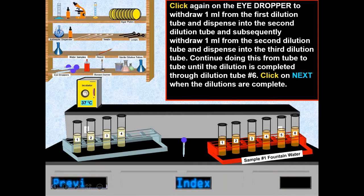Then the eye dropper was used again to withdraw 1 ml from the first dilution tube and dispense into the second dilution tube. Subsequently, 1 ml was withdrawn from the second dilution tube and dispensed into the third dilution tube.